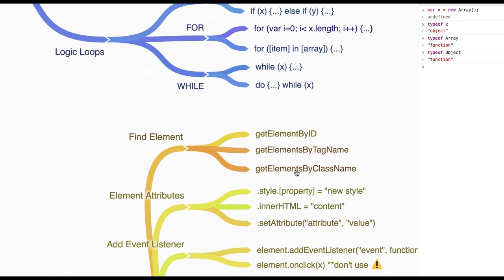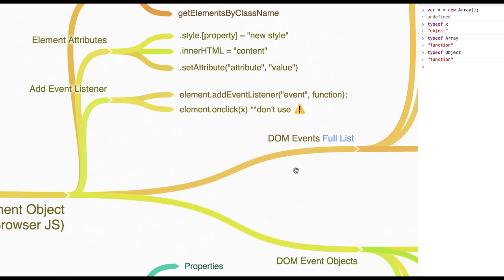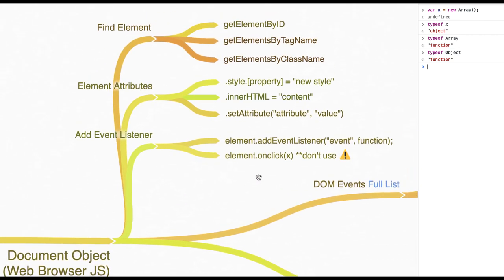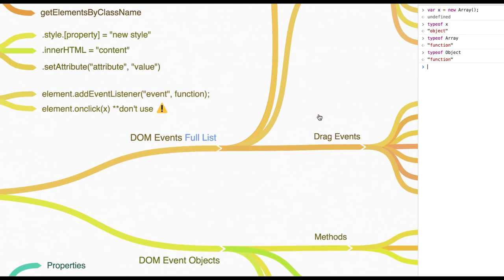Now I'll come to the document object and DOM APIs. JavaScript exists both server-side and client-side, so we need to explicitly mention which context we're working in. Here I'm talking about client-side JavaScript, where the browser comes into the picture. We talked about DOM APIs like getElementById, getElementsByTagName, getElementsByClassName, element attributes, setting a style property, setting innerHTML, and setting attributes on DOM nodes.